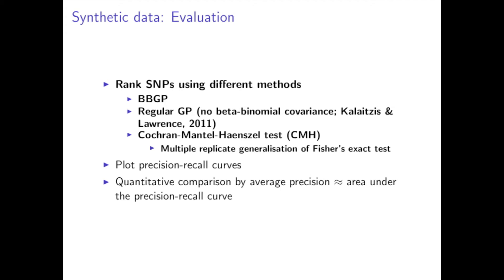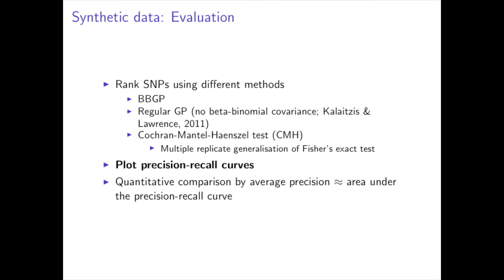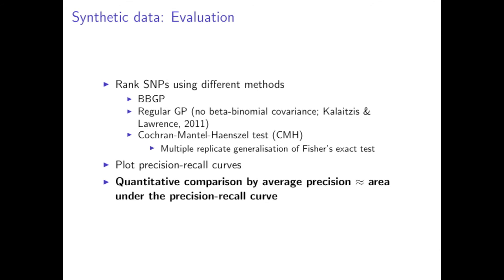We compare our BBGP method with the regular GP, which does not include the beta-binomial fixed variances, and the Cochrane-Mantel-Haenszel test, which is a multiple-replicate generalization of Fisher's exact test. We demonstrate the performance of each method by plotting precision-recall curves and by calculating the average precision.